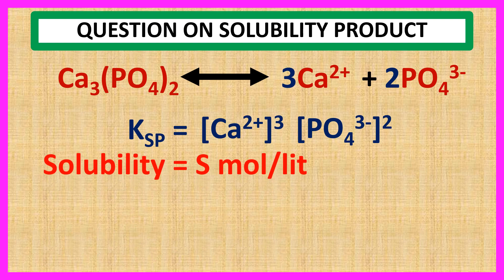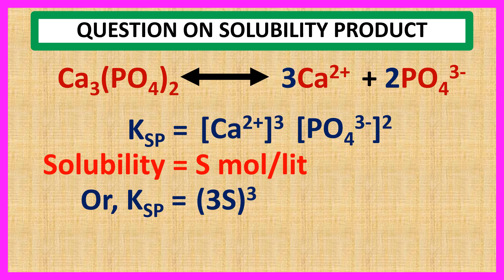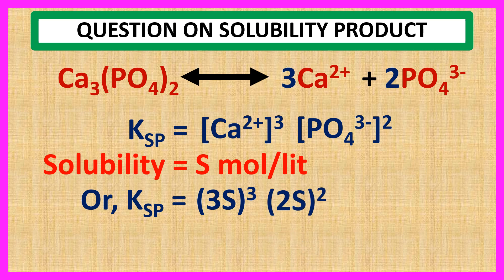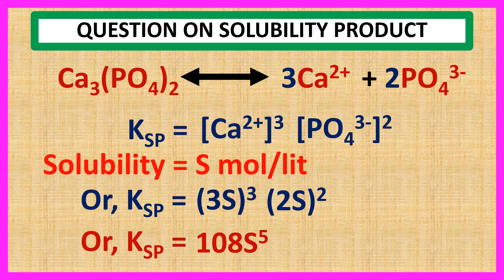Solubility is equal to S mol per liter. So Ksp is equal to (3S)³ for 3 Ca²⁺ ions into (2S)² for 2 PO₄³⁻ ions, or Ksp is equal to 108 S to the power 5. Thank you for watching this video.